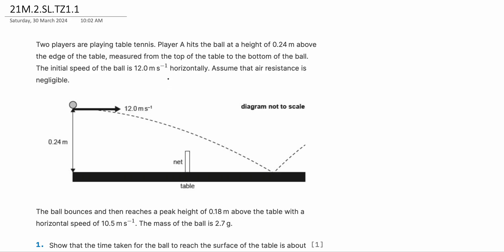Two players are playing table tennis. Player A hits the ball at a height of 0.24 meters above the edge of the table, measured from the top of the table to the bottom of the ball. The initial speed of the ball is 12 meters per second horizontally. Assume that air resistance is negligible.